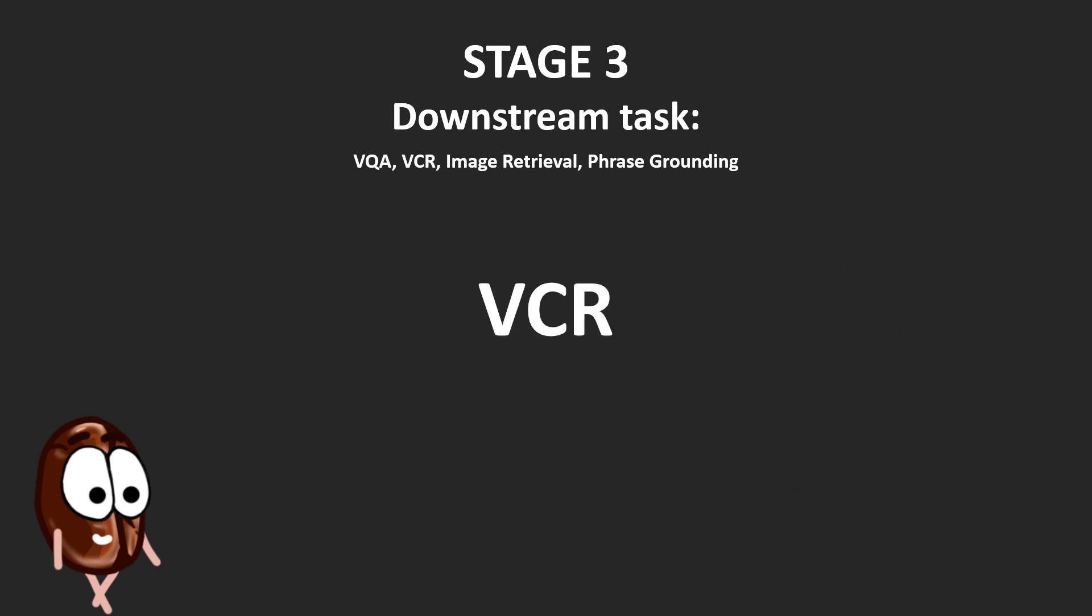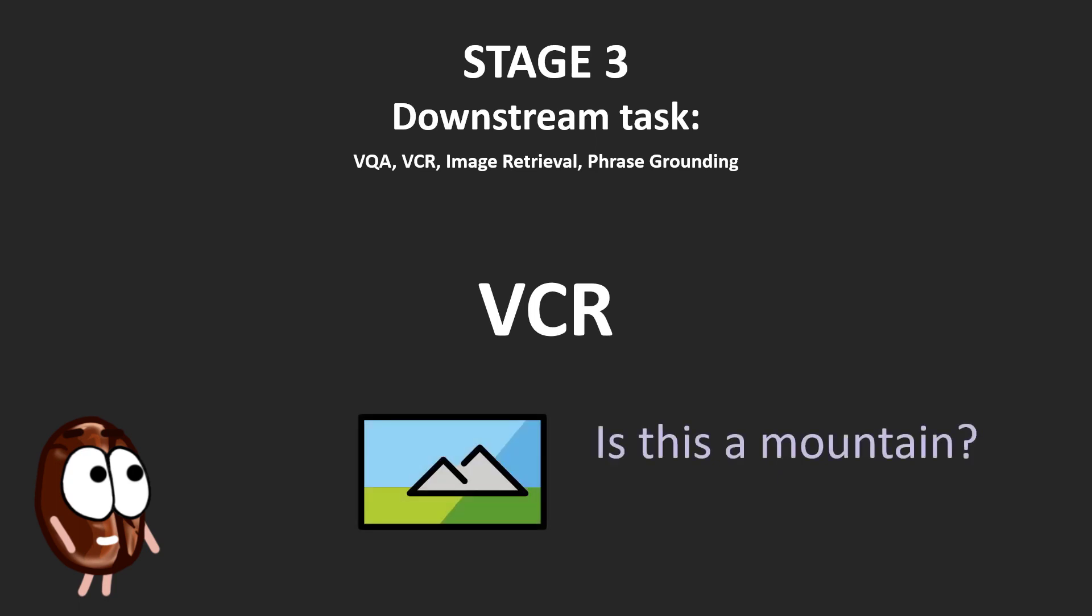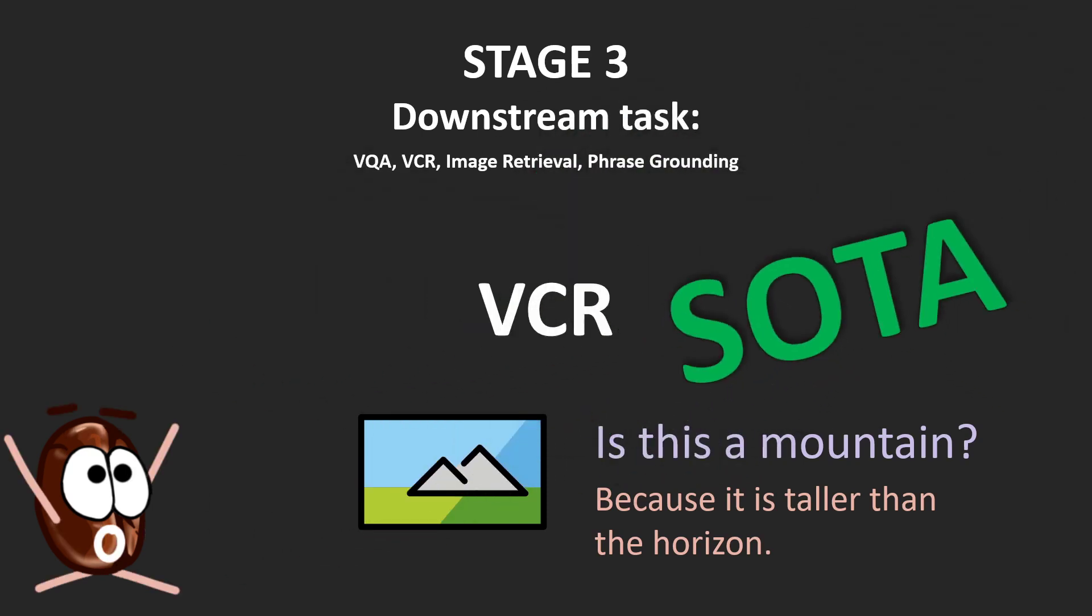Visual common sense reasoning is the better brother of visual question and answering, where the system has to provide the answer to the question, but also to give the reason for the answer. And ideally, this reason is reasoning about the problem, and is not giving a tautologic explanation like, this picture is a mountain because it is a mountain, but rather an explanation that this image depicts a mountain because the mountain is taller than the horizon, for example. Here, Wilbert also achieved state of the art by a large margin.